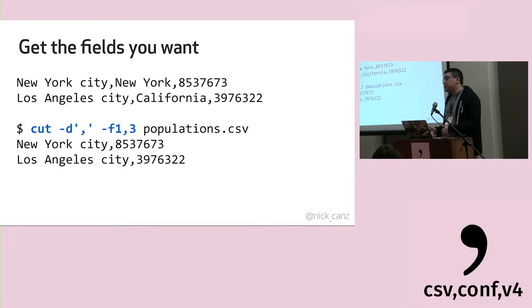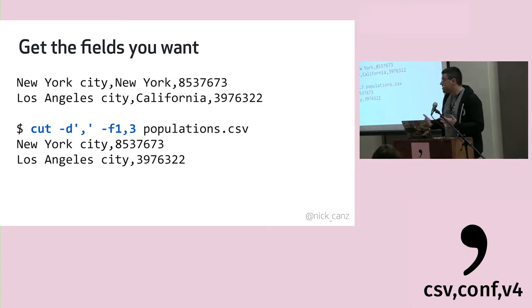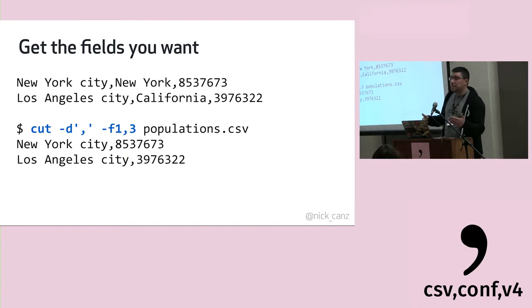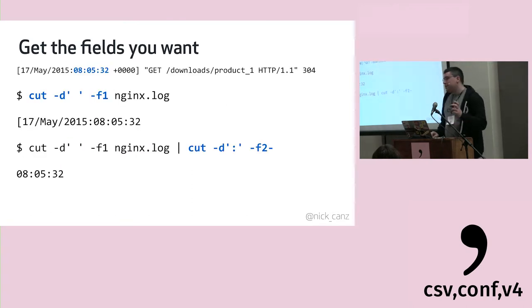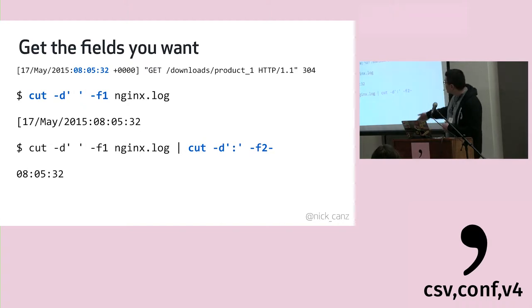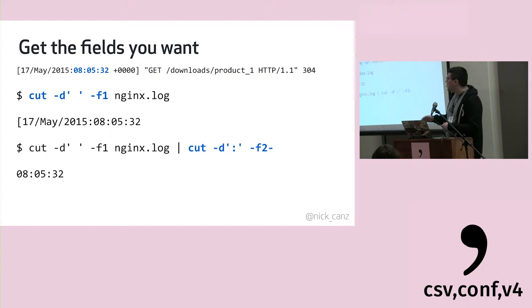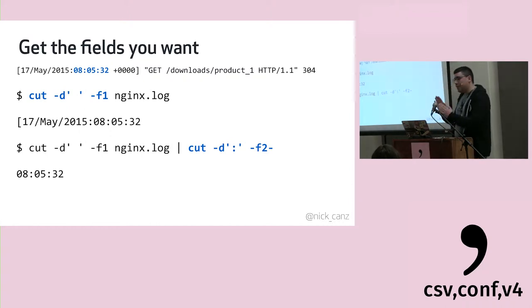Once you have the lines you want, if you don't need everything within each line, you can use 'cut' to chop up lines in a consistent manner. Here we're getting the first and third columns — city and population — dropping state. 'cut' gets really interesting with multiple passes. For example, with a server log where you only want the time portion, you can do a first pass chopping by space and a second pass chopping by the colon character to isolate exactly the data you want.